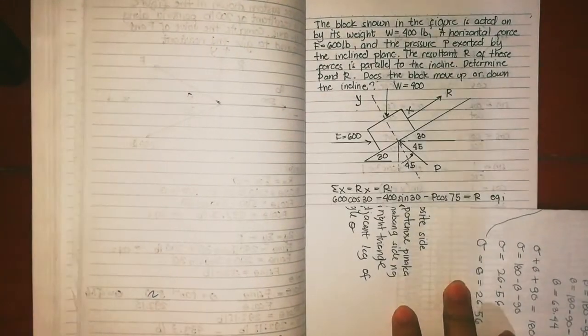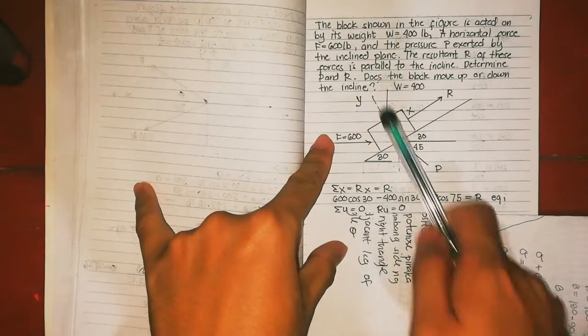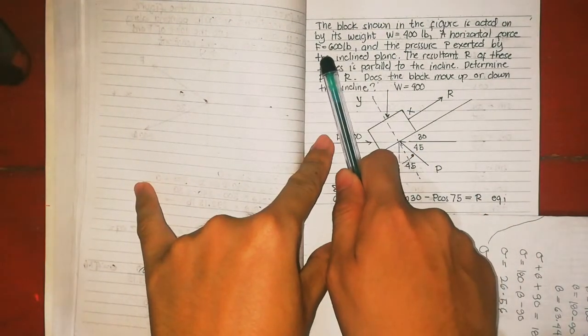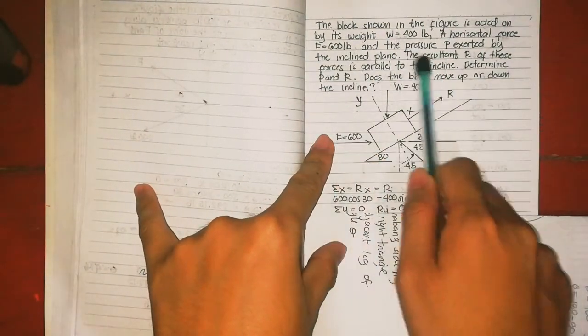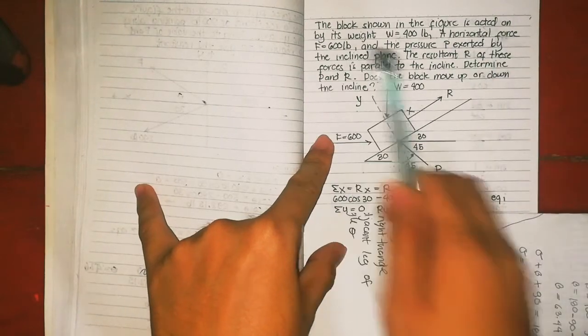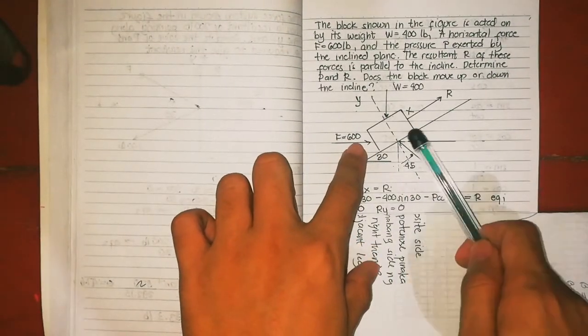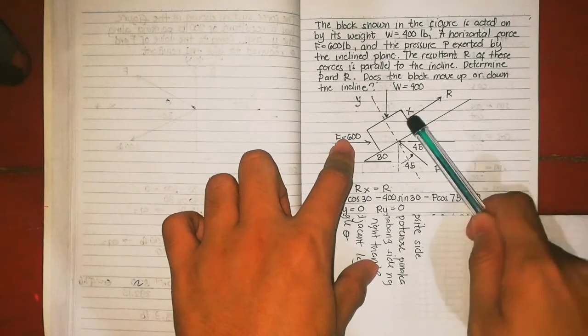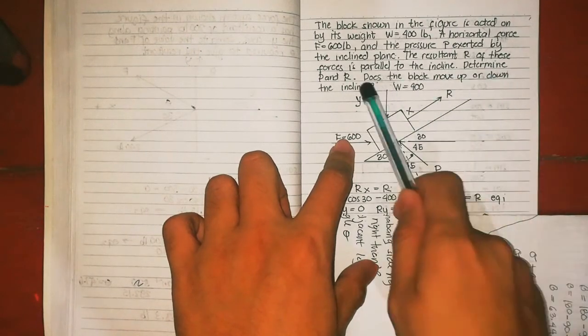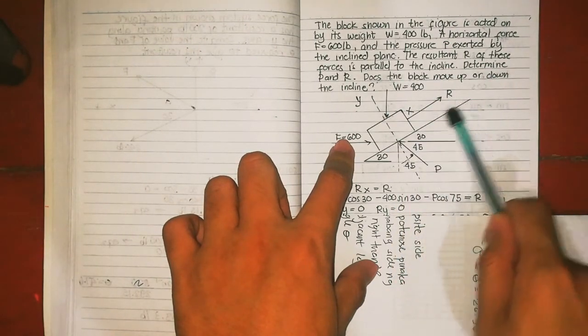We have force F, the horizontal force F on the block. Then R is the resultant parallel to the inclined, so it's parallel.